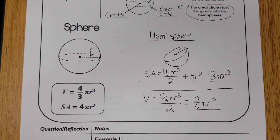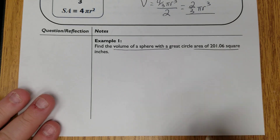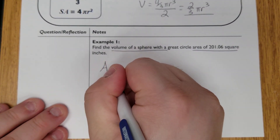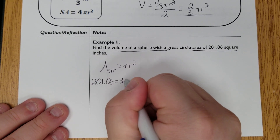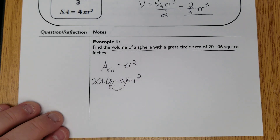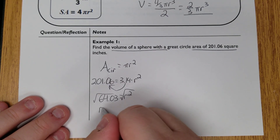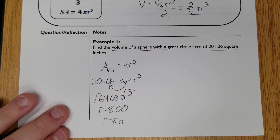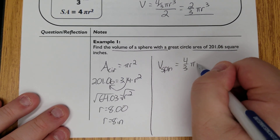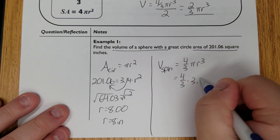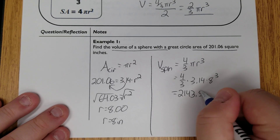The sphere example asks for volume given the great circle's area is 201.06 square inches. First, use the circle area formula: 201.06 equals 3.14 times r squared. Dividing gives r squared equals 64.03, and taking the square root gives radius equals 8 inches. Now for volume: four-thirds times 3.14 times 8 cubed. Multiplying out gives 2,143.57 inches cubed.